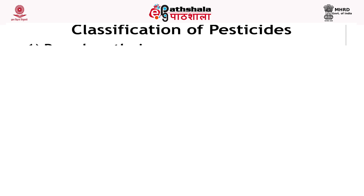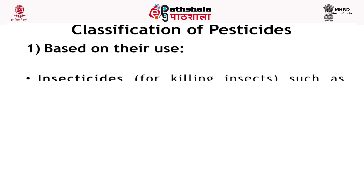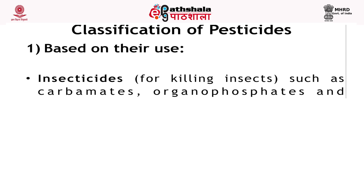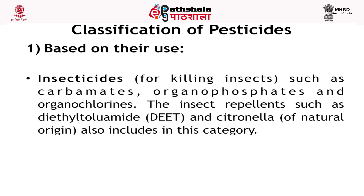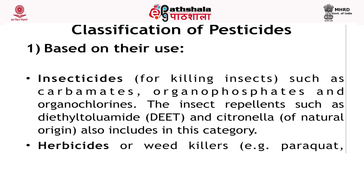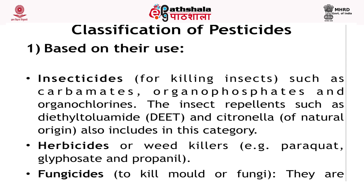Classification of pesticide is done on the basis of their use and on the basis of their chemical constituent. Based on their use, there is a large variety of pesticide designed to kill specific pests. Those most widely used include: first, insecticides such as carbamates, organophosphates and organochlorines, which are used to kill insects. Then herbicides, particularly used for weed control; examples are glyphosate and propylene.